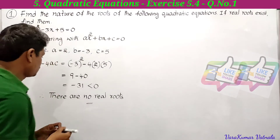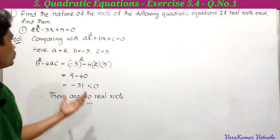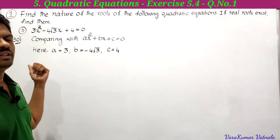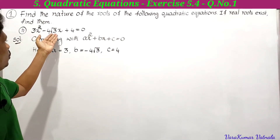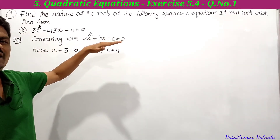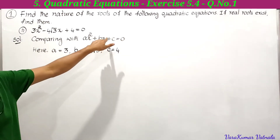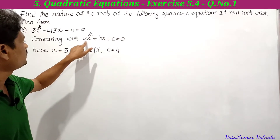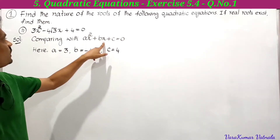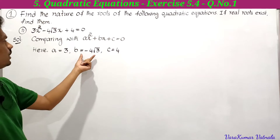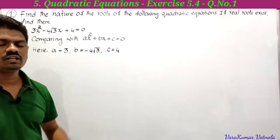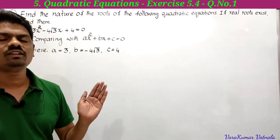That completes the first part. For the second part: 3x² - 4√3x + 4 = 0. Comparing with ax² + bx + c = 0: a = 3, b = -4√3, and c = 4.